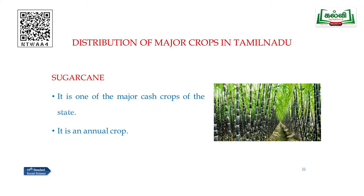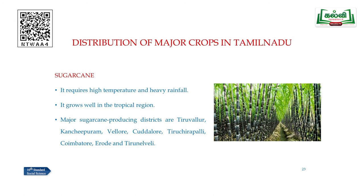Sugarcane is one of the major cash crops of Tamil Nadu. It is an annual crop that requires high temperature and heavy rainfall, and grows well in the tropical region. Major sugarcane-producing districts are Tiruvallur, Kancheepuram, Vellore, Cuddalore, Tiruchirapalli, Coimbatore, Erode and Tirunelveli.